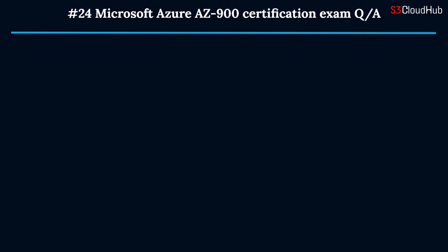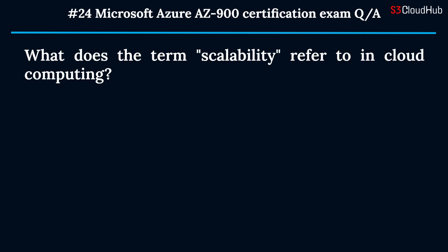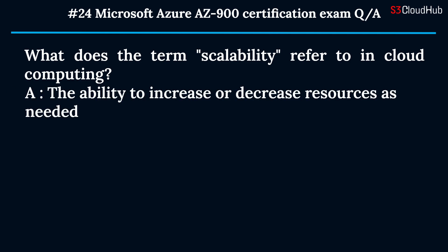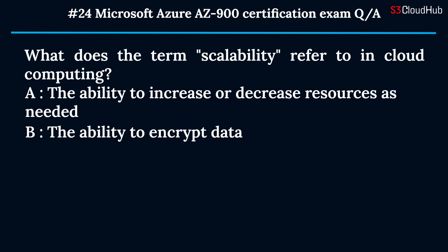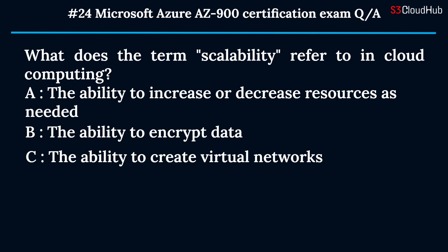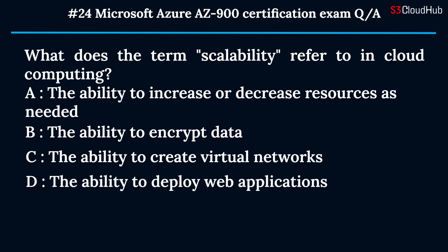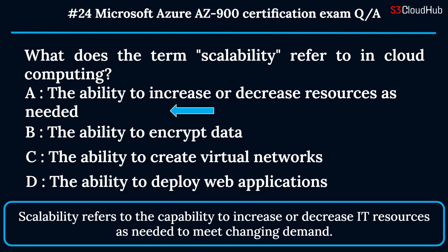The twenty-fourth question: what does the term scalability refer to in cloud computing? Option A: the ability to increase or decrease resources as needed. Option B: the ability to encrypt data. Option C: the ability to create virtual networks. Option D: the ability to deploy web applications. The correct answer is option A. Scalability refers to the capability to increase or decrease IT resources as needed to meet changing demand.